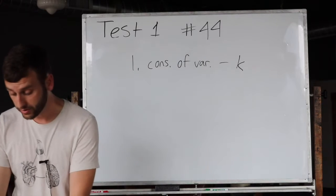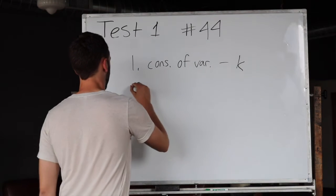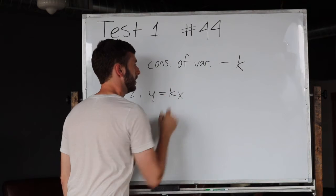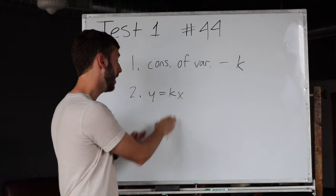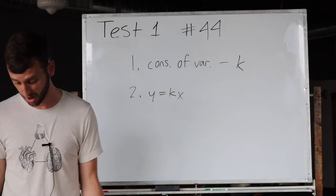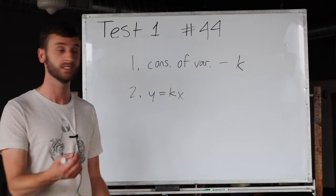It gives you the equation y equals kx, so I know y equals kx and I need to solve for k. So I need an x and a y value. Well, they also give us a table of x and y values. So take the first x value, the first y value, you plug them in and solve for k.